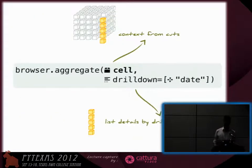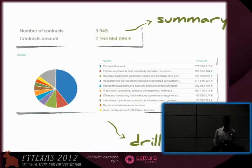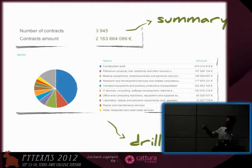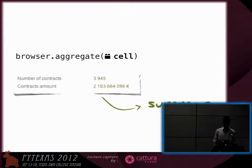You have a browser, you just call aggregate with a predefined cell, and optionally you can drill down. The result contains a summary and a drill down if you request it according to a certain dimension. If you are just interested in a summary of your cell, you just call browser.aggregate on the cell and you get a summary.